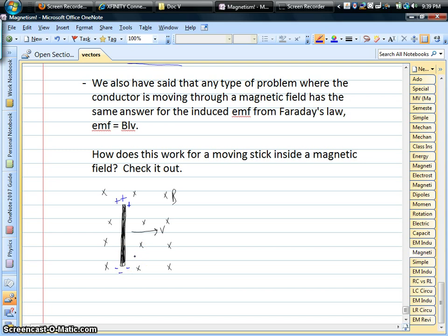So literally, you do have a current because of Qv cross B, but it's not sustained. Eventually, these charges get stuck on the two sides, and the stick polarizes. So you've induced a dipole on the stick as long as you're moving it.